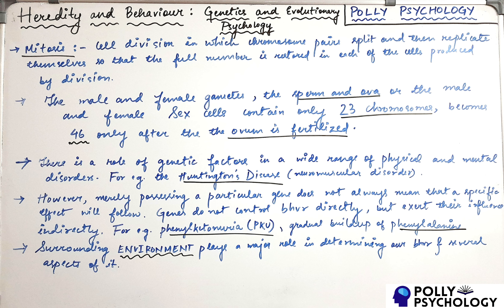Most cells in the human body contain 46 chromosomes, and they exist in pairs — that is, 23 pairs equals 46 chromosomes. When such cells divide, the chromosome pairs split, and after the cells have separated, each chromosome replicates itself so that the full number is restored. This kind of cell division is known as mitosis.